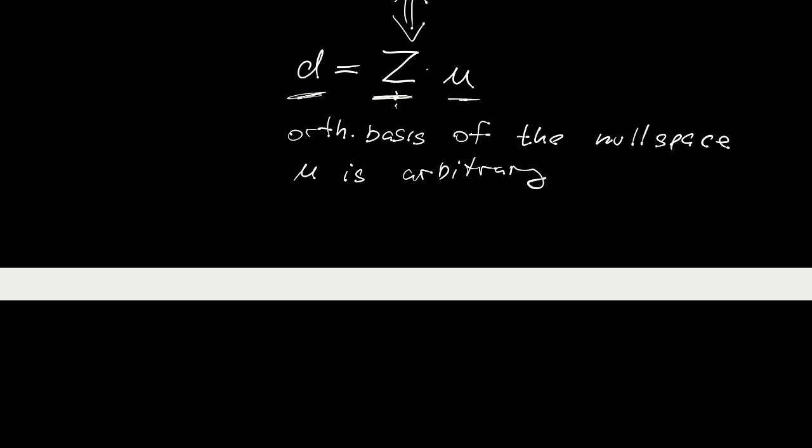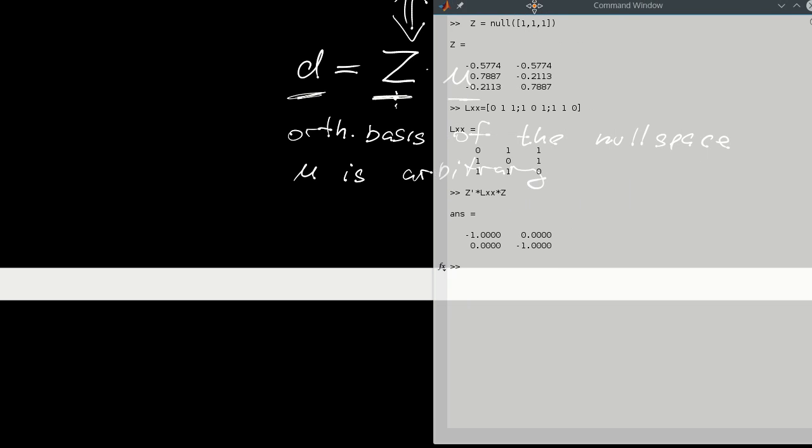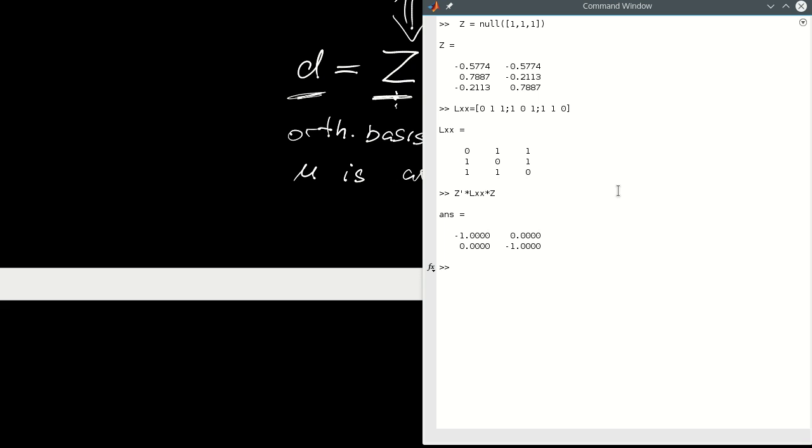Let's now turn a little bit more computational, so I will invoke MATLAB. And you can use null function, which computes exactly what you want. It gives you an orthonormal basis for the null space. In our case, this null space is two-dimensional, so we have two columns. So the matrix Z is formed by two columns over here.